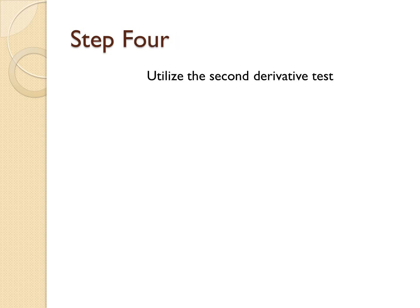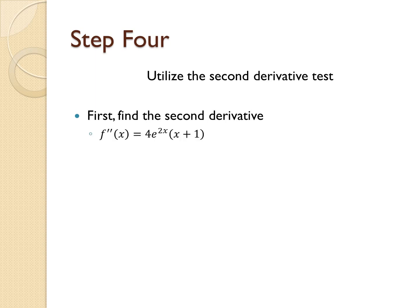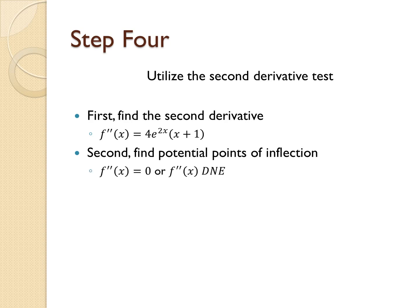For step 4, we utilize the second derivative test. The second derivative is f''(x) = 4e^(2x)(x + 1). We find potential points of inflection in the same manner as before, and we find that our potential point of inflection is at x = -1.